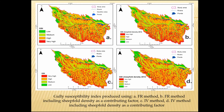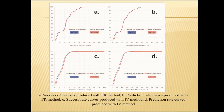These are the final gully susceptibility index maps produced with the frequency ratio method — one without including sheep holes and one including sheep holes as a conditioning factor — and the statistical index method, also with and without sheep hole density as a contributing factor. We obtained very good validation of our gully susceptibility index models, making them reliable for local authorities, archaeologists, and geographers.